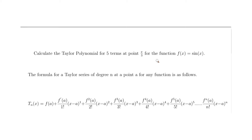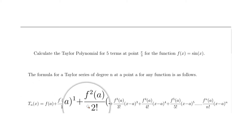In this video we're going to calculate a Taylor polynomial for the function sine of x at π/3. The formula for a Taylor series has three important things: the degree of the polynomial, which in our case is 5, so n = 5; the point a, which is π/3; and the function, which is sine of x.